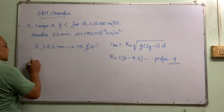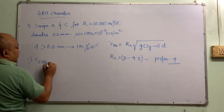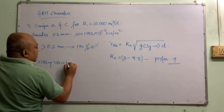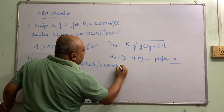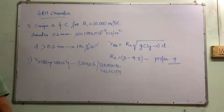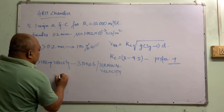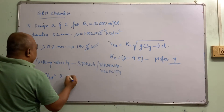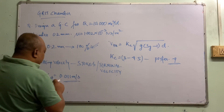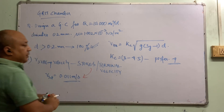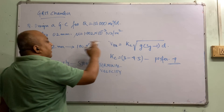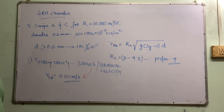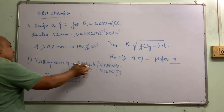Number one: estimate the settling velocity using Stokes equation and the iteration technique using terminal velocity. For 0.2 mm particles, the settling velocity is approximately 0.011 m/s. In the exam, everything — settling velocity, horizontal velocity — will be combined in a single question worth 40 to 50 marks. Typically the settling velocity value will be given; derivation of Stokes law is separate.